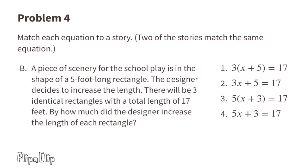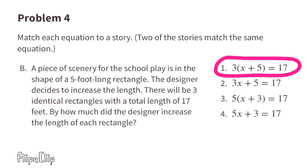Story B: a piece of scenery for the school play is five feet long. The designer increases the length so there will be three identical rectangles with a total length of 17 feet. By how much did the designer increase the length of each rectangle? We think of this as three rectangles times the original five feet plus an additional unknown length equals 17 feet. Story B matches equation one: 3 times x plus 5 equals 17.